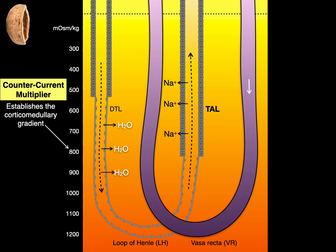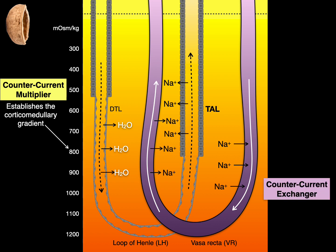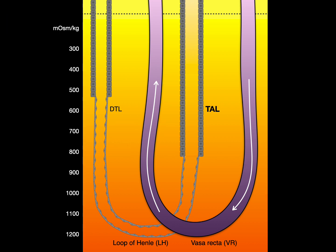But the vasa recta, the descending portion, sodium goes in and the ascending portion, sodium goes back out into the interstitium. This is the countercurrent exchanger. It maintains the corticomedullary gradient.